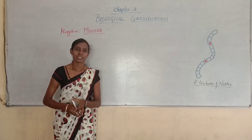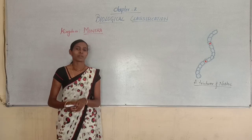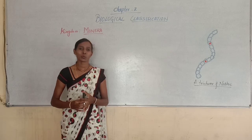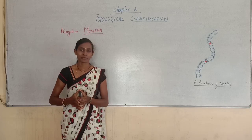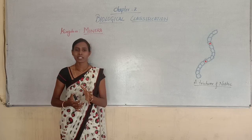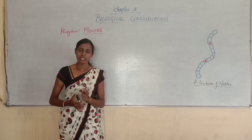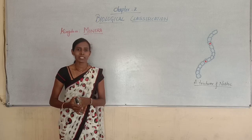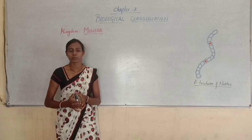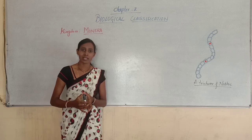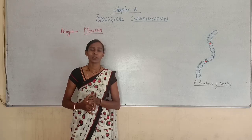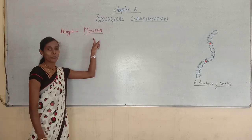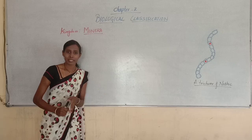Hello students, welcome back to biology class. In the previous class we discussed the five kingdom classification proposed by R.H. Whittaker. The five kingdoms are Kingdom Monera, Protista, Mycota, Plantae, and Animalia. Now we are moving on to the main kingdoms, and the first kingdom is Kingdom Monera, which is very important.